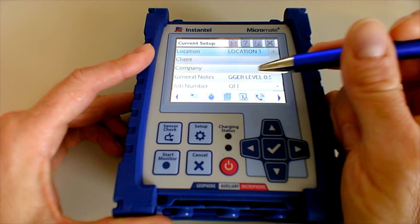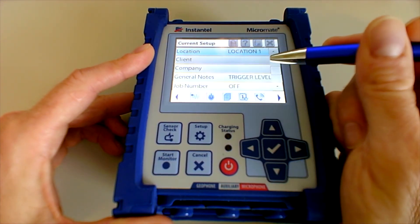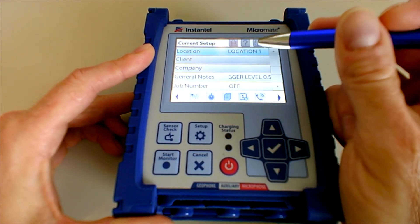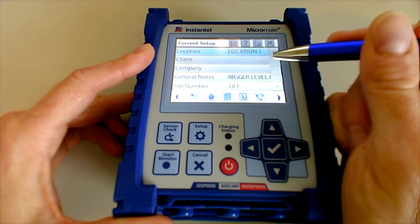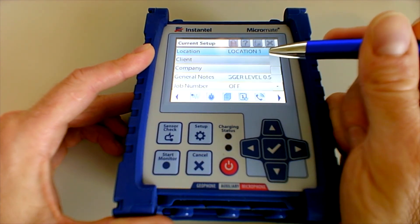Client, company, you can change those as well. One thing with location, if you're using the auto call home service, your emails are going to identify the unit based on the location name. So you want to make sure that location name is known to you and that it makes sense so that if you get an alert, you know exactly where that seismograph is calling you from on your project.